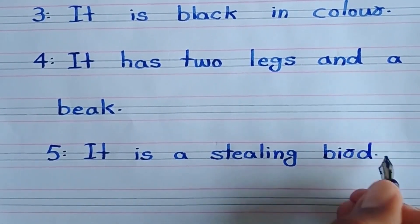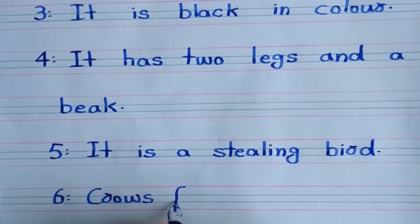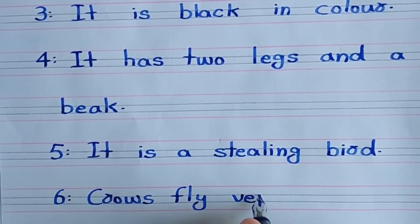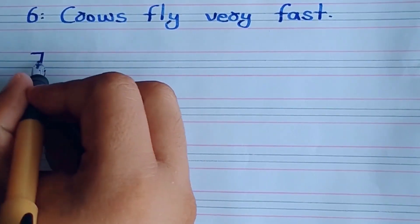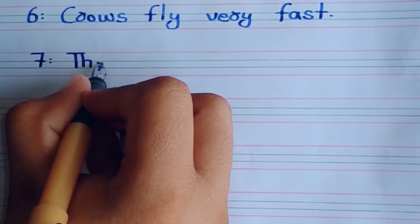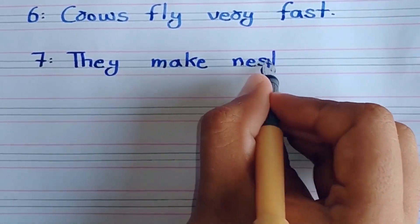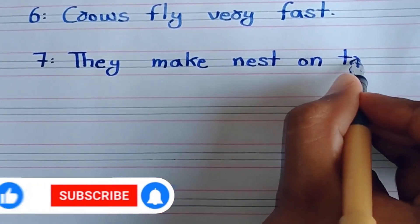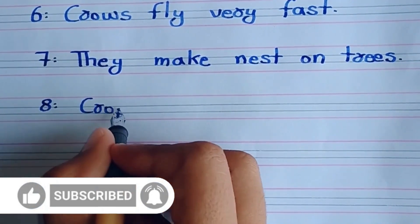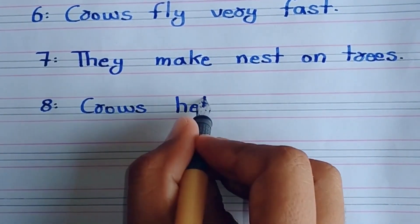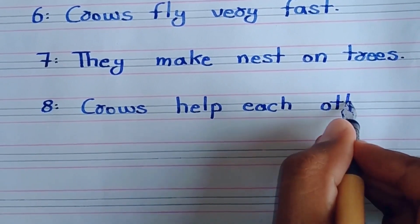It is a stealing bird. Crow flies very fast. They make nests on trees. Crows help each other.